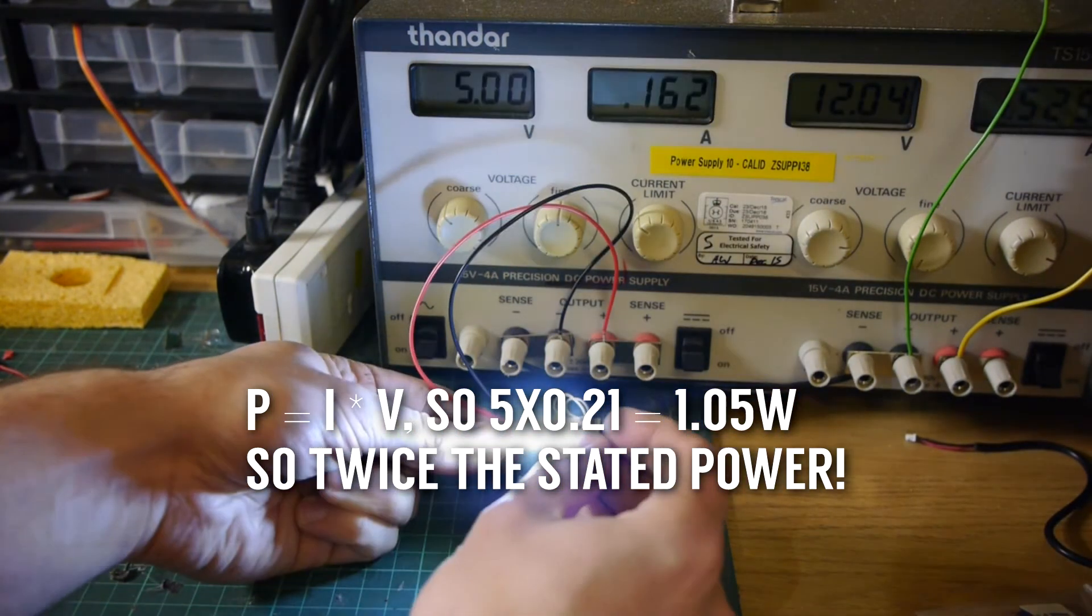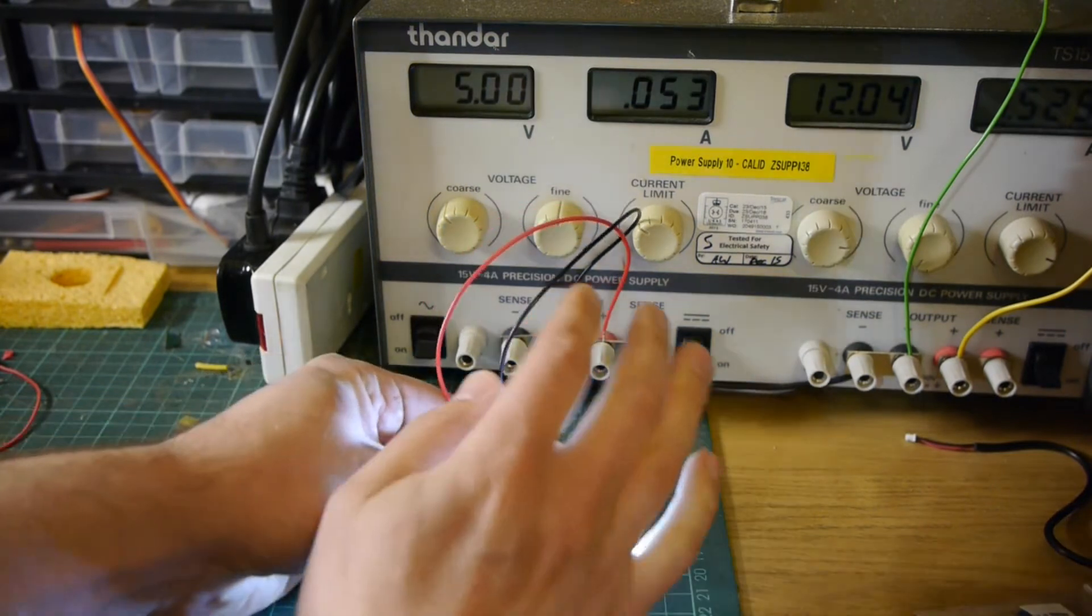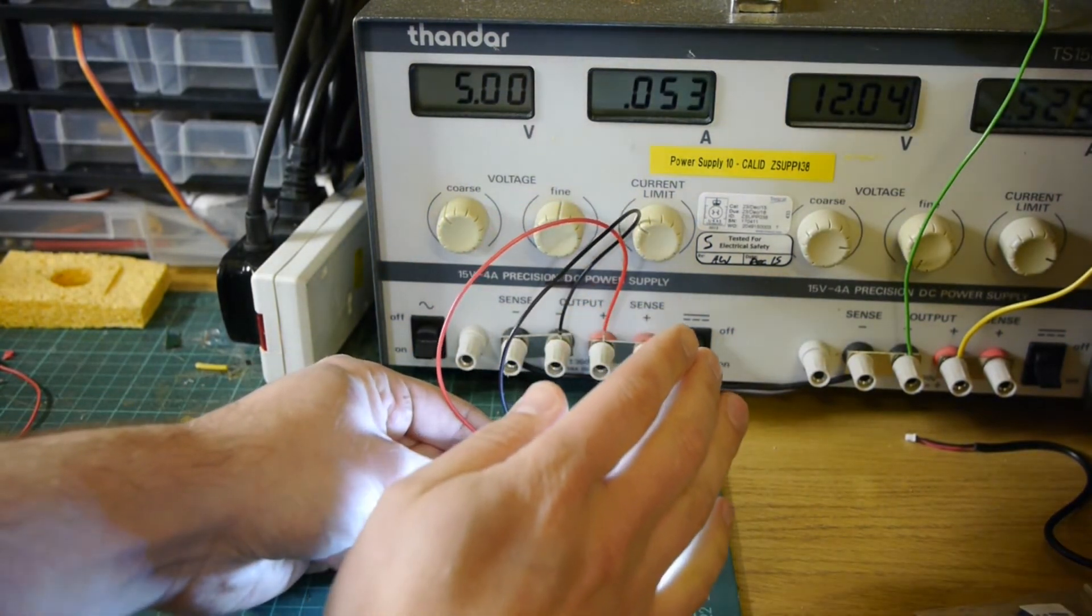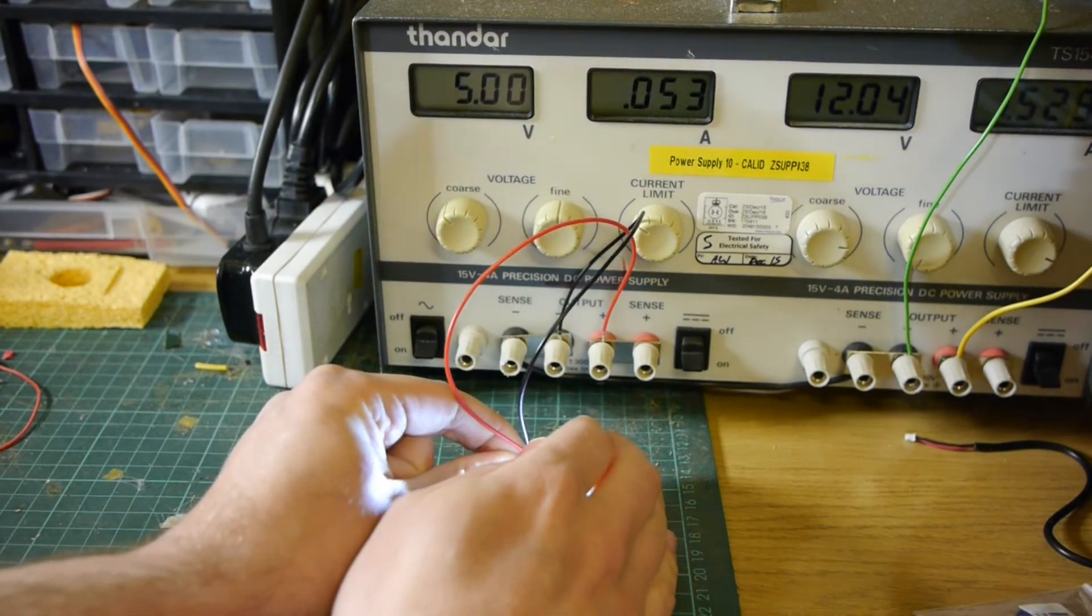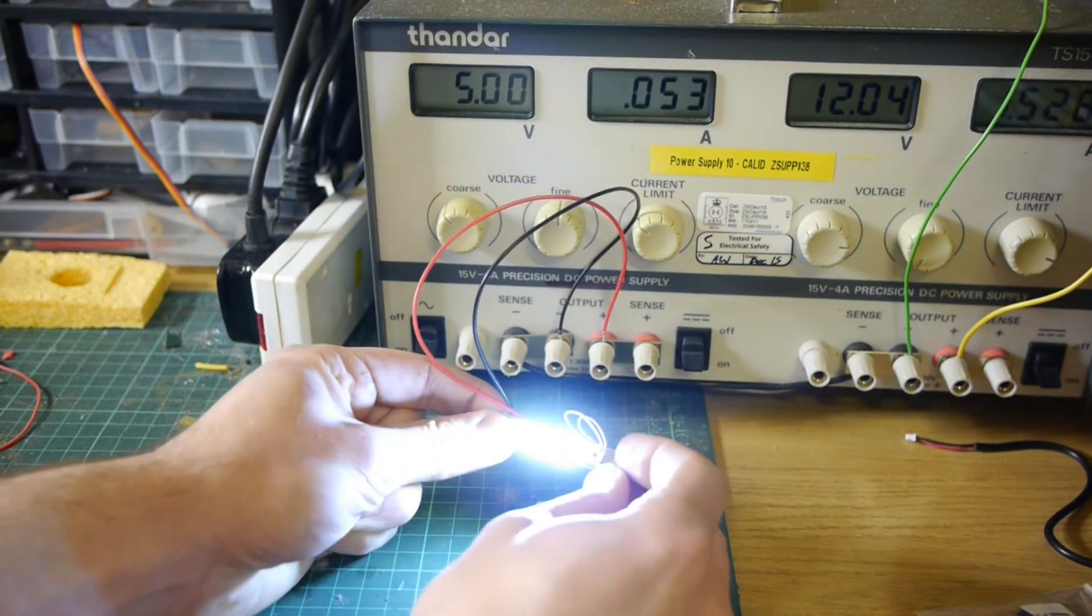So if we go onto the slightly lower power version I can barely see that because I've been blinded by the LEDs but we're drawing about 53 milliamps at the lower power setting.